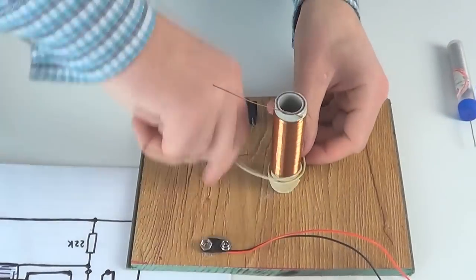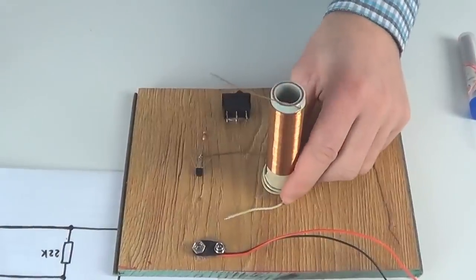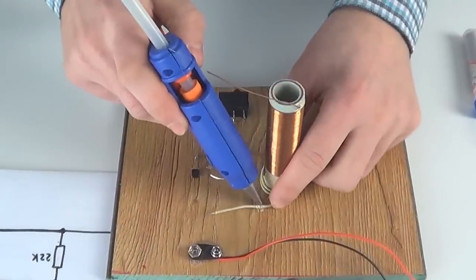We wind this cable twice around the coil and fixate it at both ends with hot glue to prevent it from unspooling.